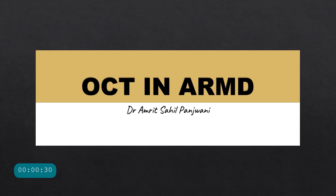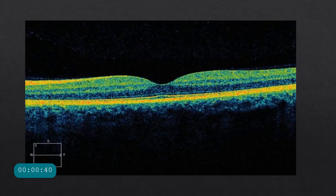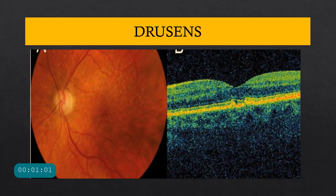Hello and welcome to Insight Ophthalmology. This is Dr. Amrit welcoming you to another important lecture. Today we are studying the OCT pictures in age-related macular degeneration. We will assume you know the normal anatomy of the macula and retina on OCT — I already have a playlist of free videos on OCT covering normal anatomy. Here in ARMD we will discuss each feature seen on fundus and how to find it on OCT.